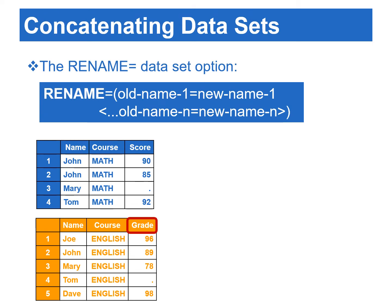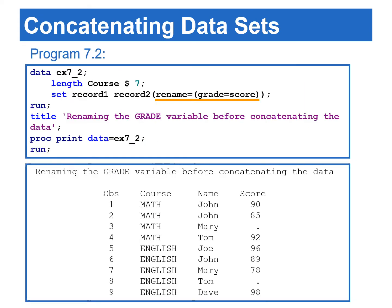Since the variables grade and score are used separately to record testing scores for English and math, we can rename one of the variables by using the rename data set option. In the rename equals data set option, old name is the variable we want to rename, and new name is the newly given name. Program 7.2 utilizes the rename equals option to rename grade to score in the record two data set, and the variable course is set to a length of seven in the length statement.